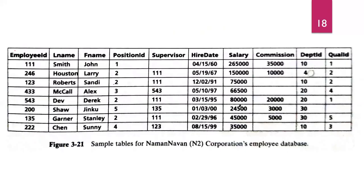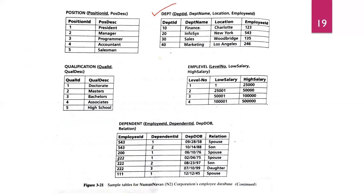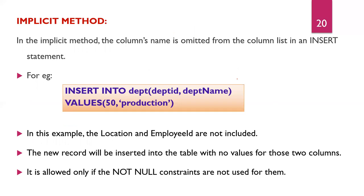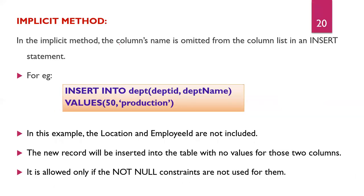Implicit method: the column name is omitted from the column list. For example, INSERT INTO department (department_id, department_name) VALUES (value1, value2) — here we only list two of the four columns. The other two columns — location and employee ID — are not included, so that new record will be inserted with null values for those two columns. This is allowed only if those columns do not have a NOT NULL constraint; otherwise you will get an error.